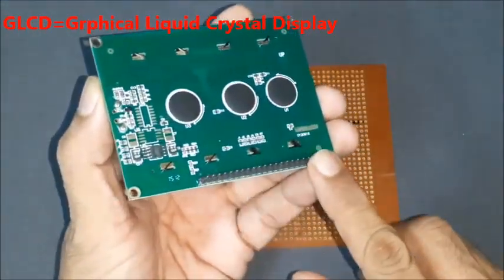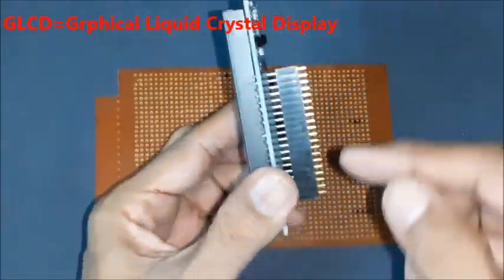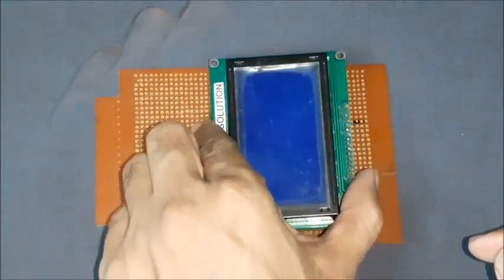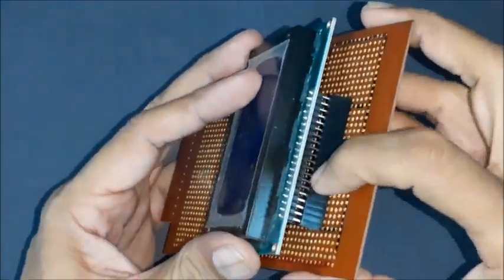The GLCD should be connected to 20-pin berg strip and plan its position on the PCB. Position the GLCD to match the ends of the PCB and make necessary holes to hold it.